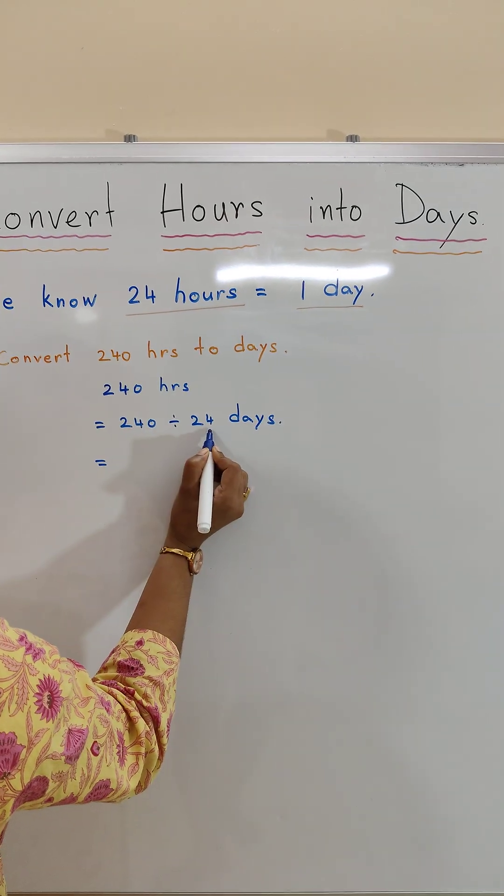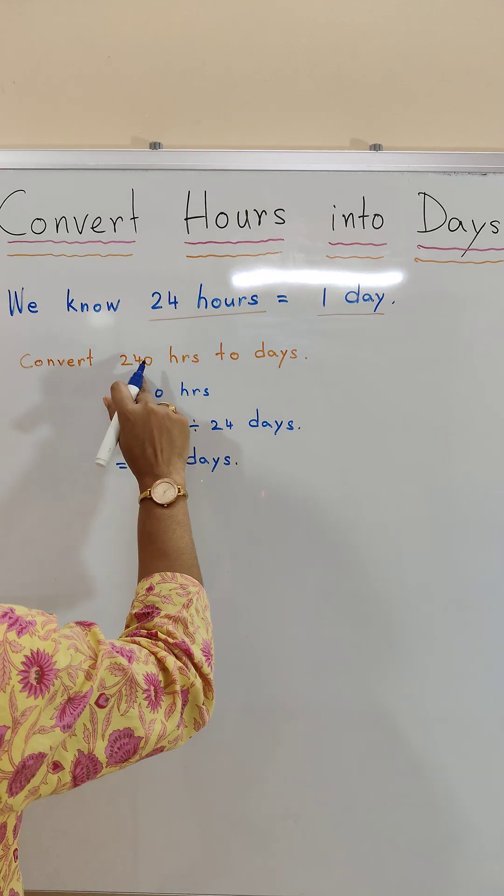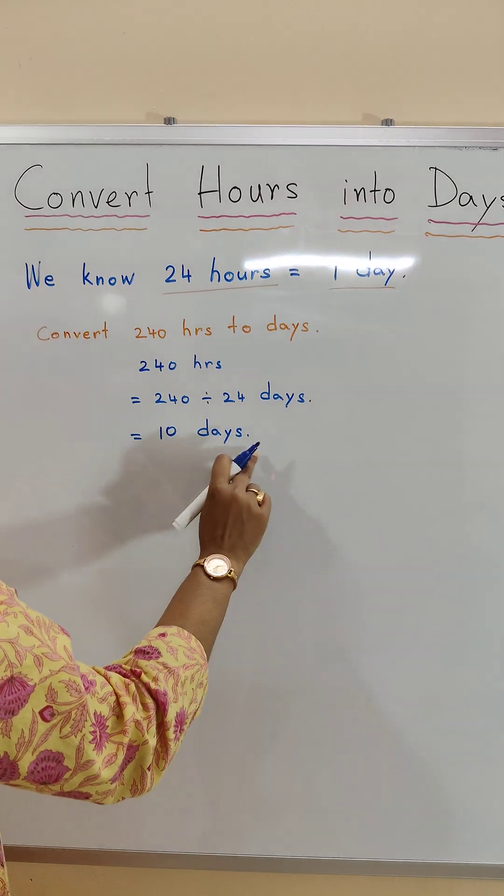So 24 ones are 24, 1, and 0 will come down. So 10 days. 240 hours is equal to 10 days.